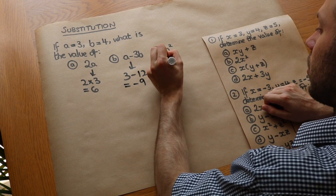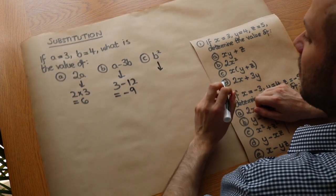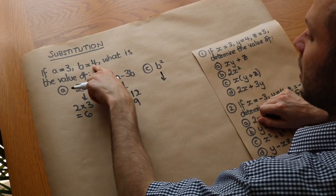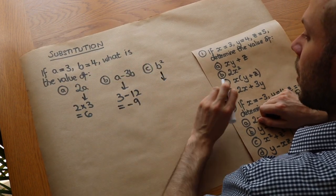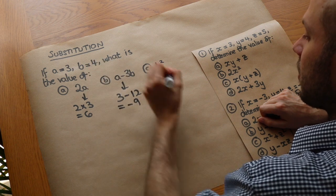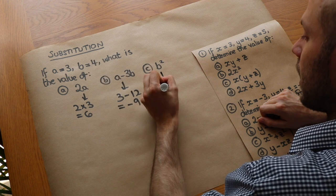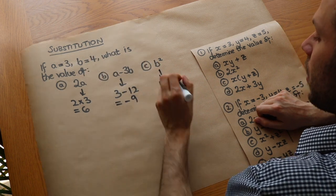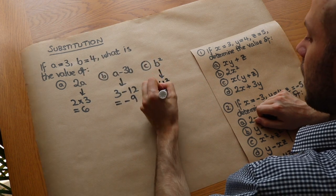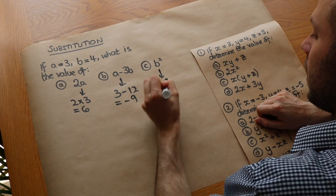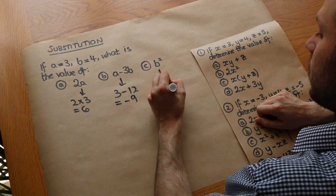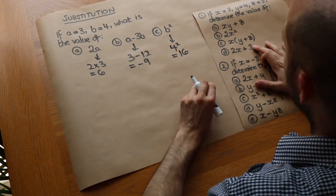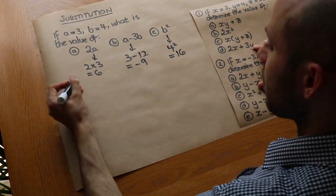Finally, we've got b squared. What is the value of b squared? Well, b is 4, so that's just 4 squared, and 4 squared we know is equal to 16. Now let's do some more examples.